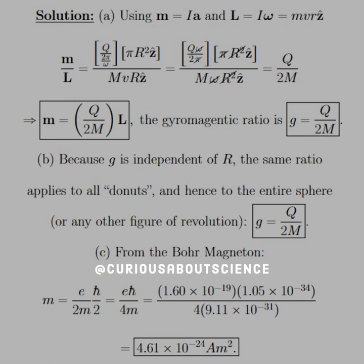We see we get a lot of cancellations in the next step. The omegas cancel, the r squares cancel, the π's cancel, leaving us with Q over 2M. So we say that m = (Q/2M)L, and the gyromagnetic ratio is g = Q/2M.